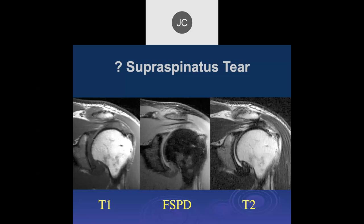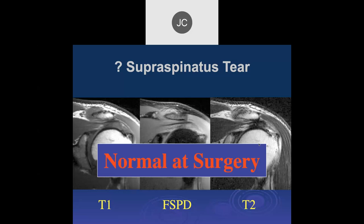Question of supraspinatus tear: I think there is a near full-thickness defect of the bursal side. The musculotendinous junction appears retracted by about a centimeter and a half — this looks like a full-thickness tear. But when the patient went to surgery, this was normal. I would still call it a complete full-thickness tear. This may be a case where there's scarring and the arthroscope couldn't get far enough to actually see the tear.